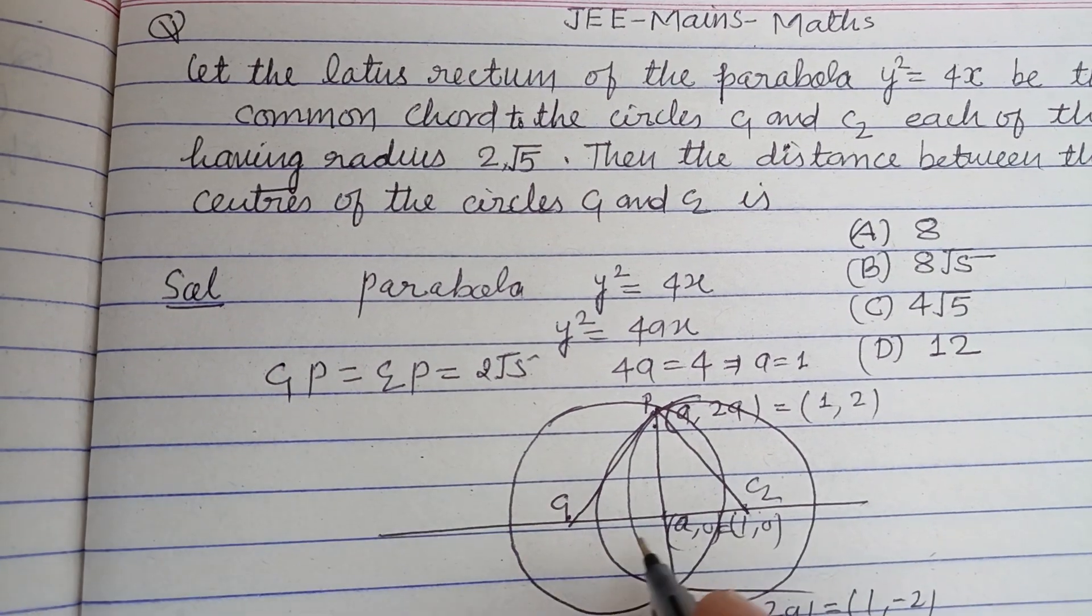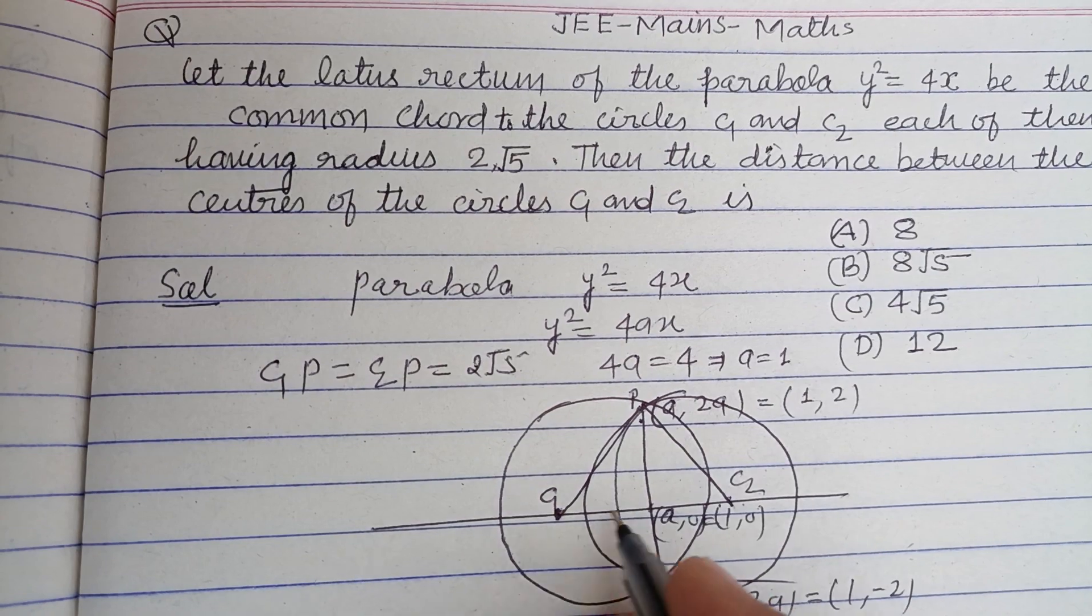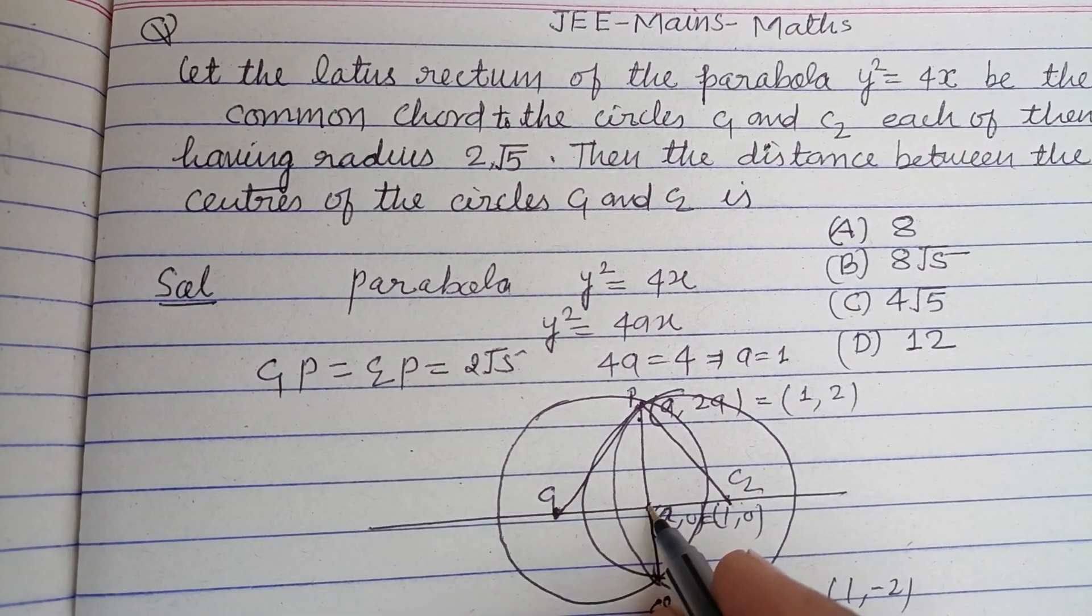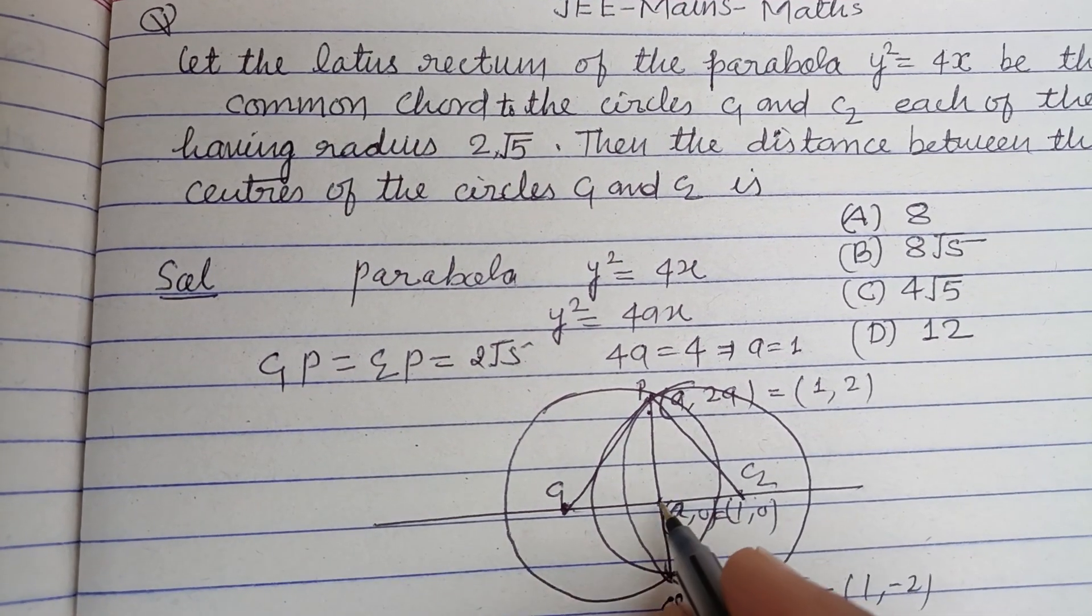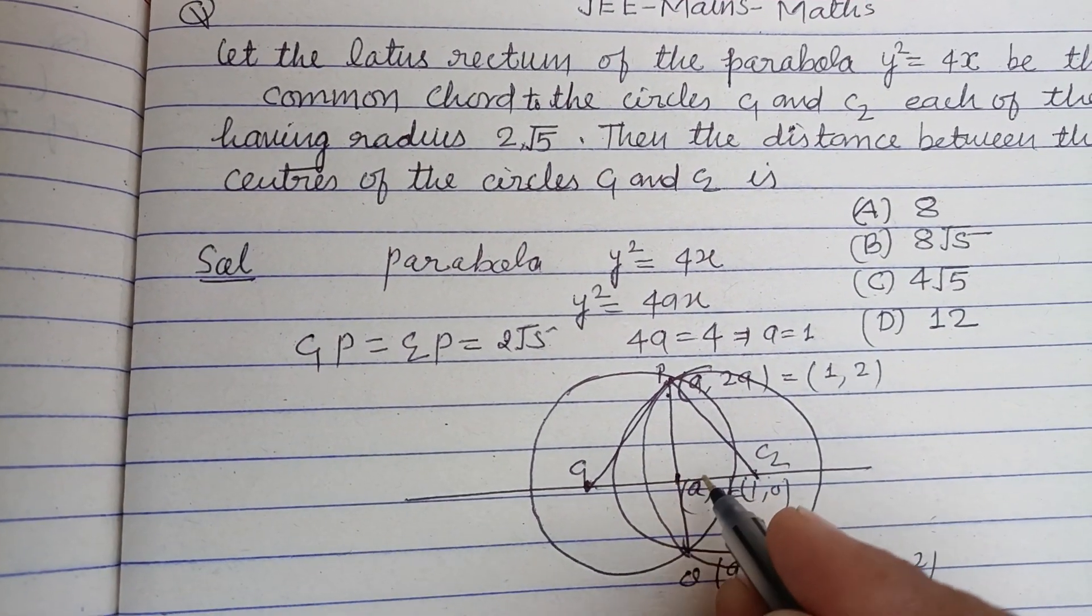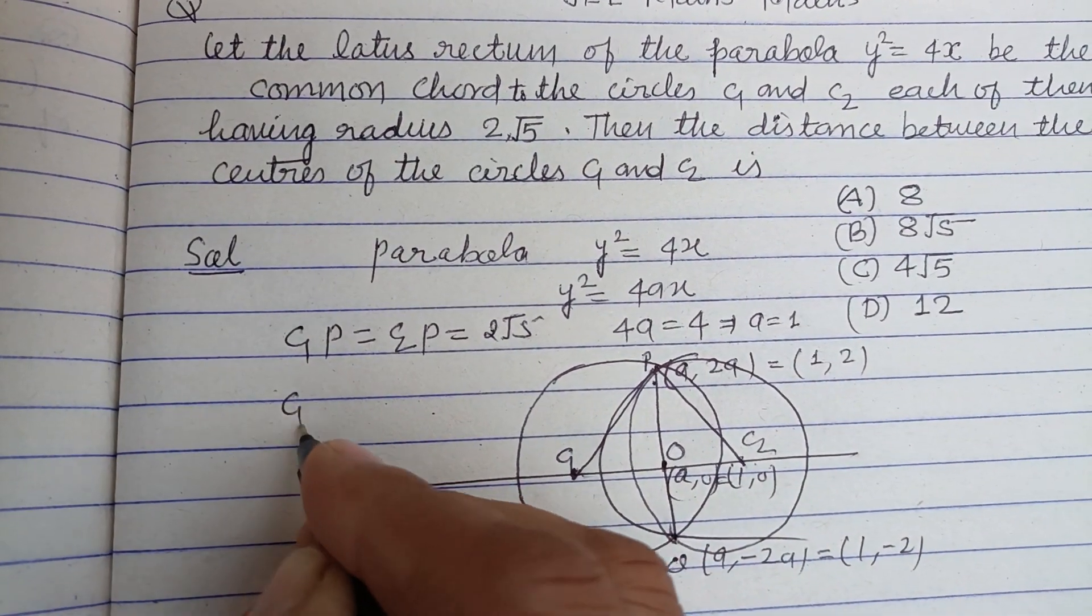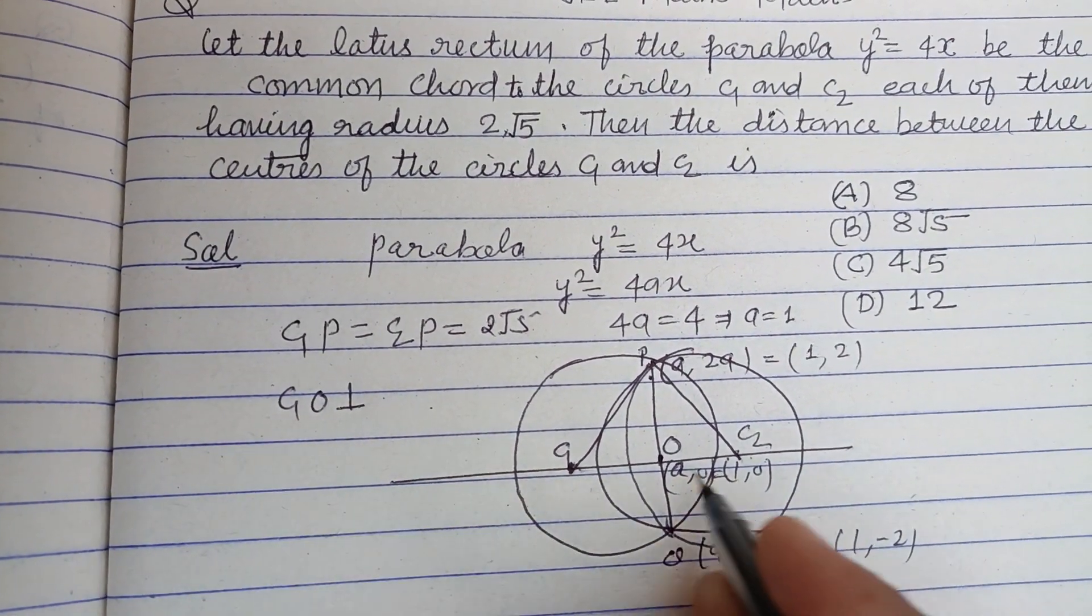And we know by the theorem that the line which joins the center of the circle to the chord is perpendicular to the chord. So let this be O, then C1O is perpendicular to C1C2.